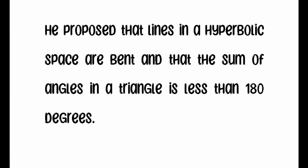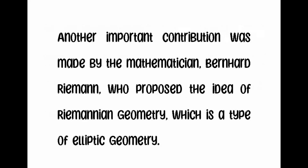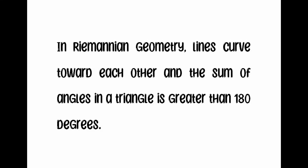Another important contribution was made by the mathematician Bernard Riemann, who proposed the idea of Riemannian geometry, which is a type of elliptic geometry. In Riemannian geometry, lines curve toward each other and the sum of angles in a triangle is greater than 180 degrees.